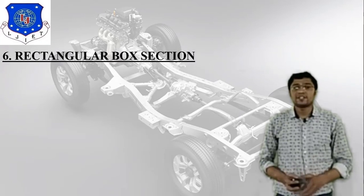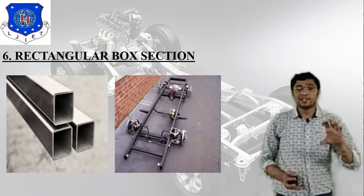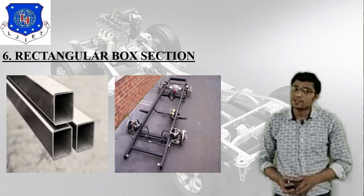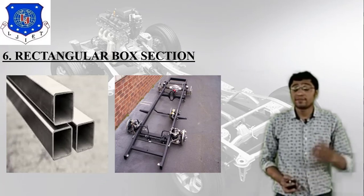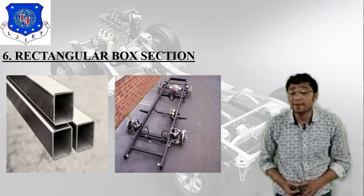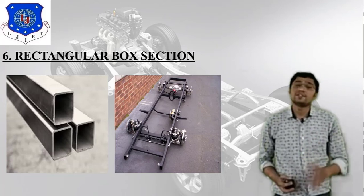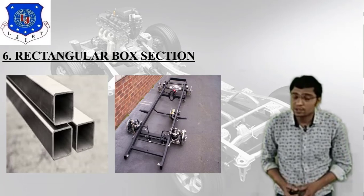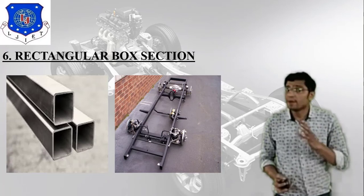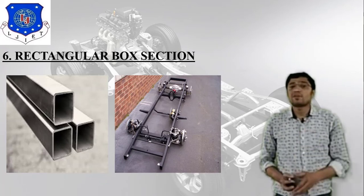The sixth type is the rectangular box section. In the image, the left side shows the rectangular box section and the right side shows its application. Different sizes of rectangular box section are available. The application is in semi-buses and mini-buses, where this type of rectangular box section is used. According to requirement, this type of frame section is useful.